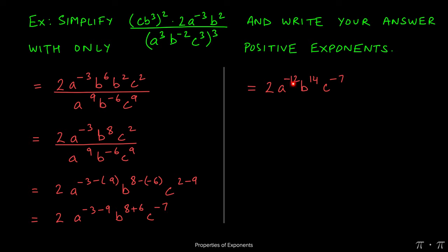Now here, nothing else can be simplified. So we look to our instructions. The question wanted all the exponents to be positive. So the two and the b to the 14th will stay exactly where they are, while a to the negative 12 and c to the negative seven, we can move to the denominator by using the negative power rule.